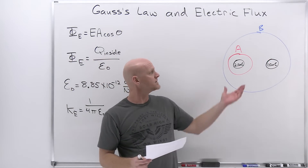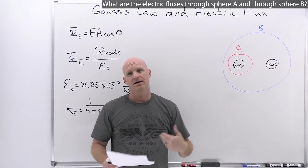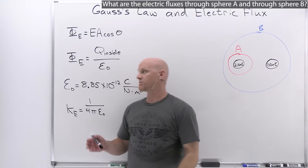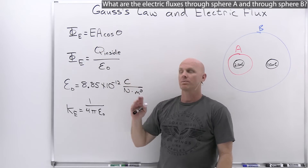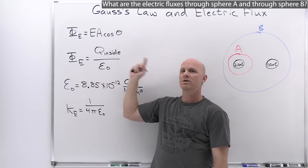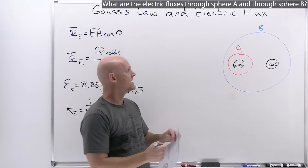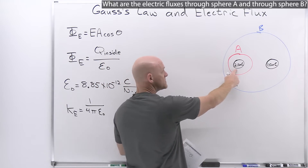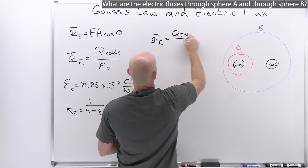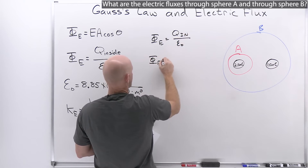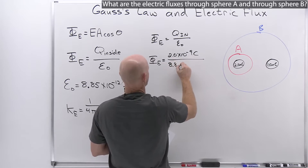The first problem asks for the electric fluxes through sphere A and through sphere B. To calculate electric flux, we can either use the electric field and surface area, or use Gauss's Law — all we need is the total enclosed charge. For sphere A, the only enclosed charge is 2 nanocoulombs, so the electric flux equals Q-inside over epsilon naught: 2.0 × 10⁻⁹ C divided by 8.85 × 10⁻¹² C²/(N·m²).